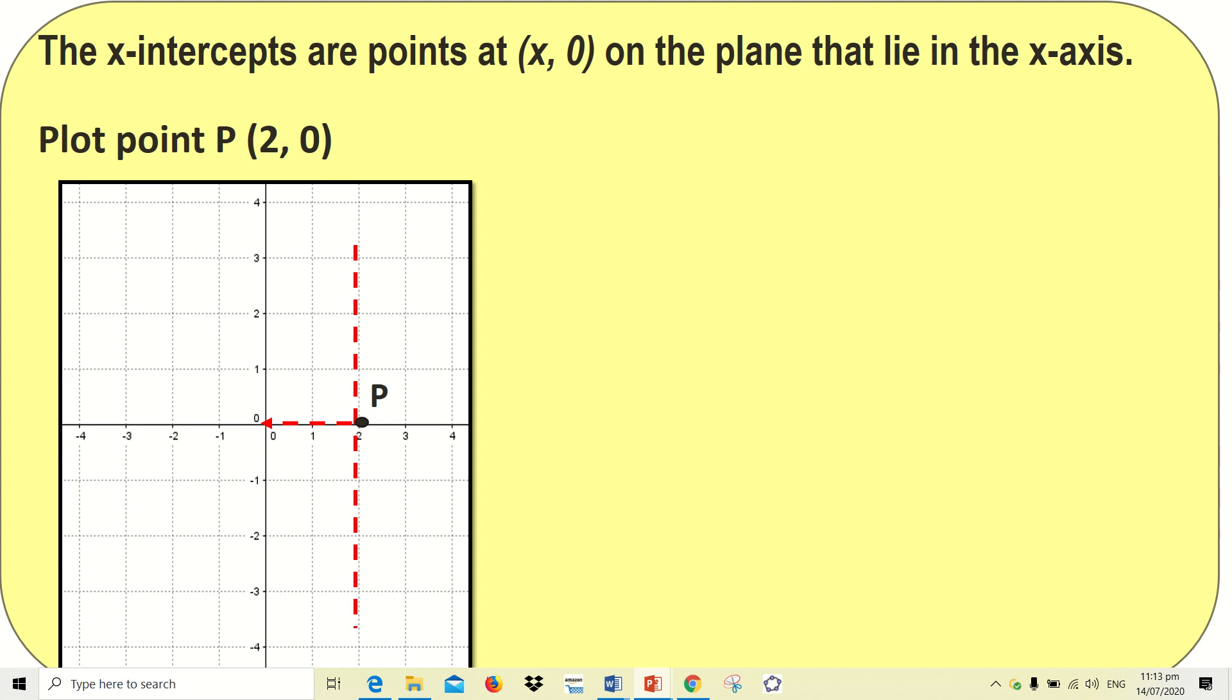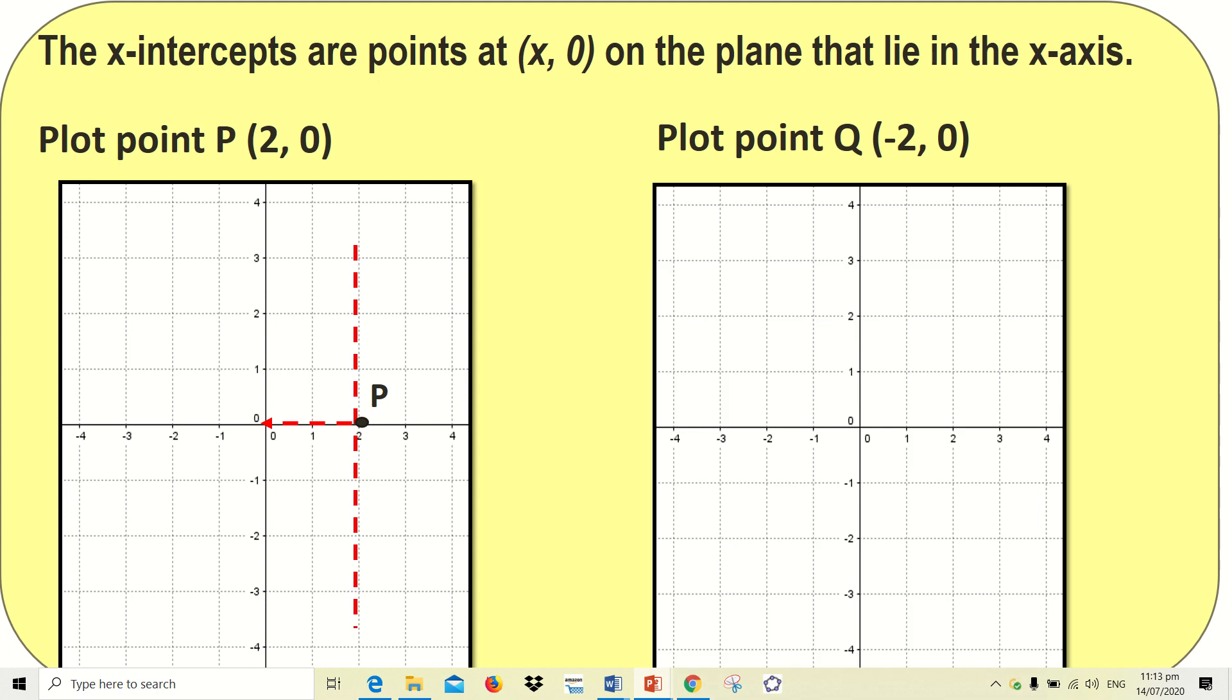Another example: plot the point Q at (-2, 0). Following the same step, you lightly sketch a vertical line at your x-coordinate, which is -2, and a horizontal line towards 0. Plot the point where the 2 lines meet. This is where your point Q is being located.